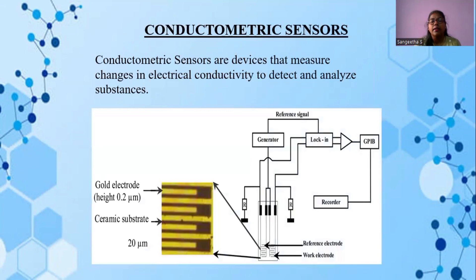Conductometric sensors. Conductometric sensors are devices that measure changes in electrical connectivity to detect and analyze questions.